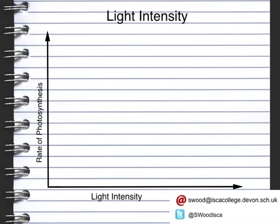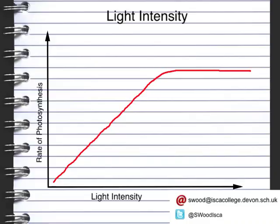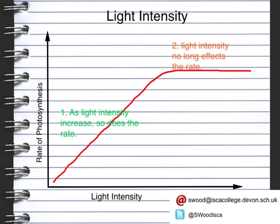Our third and final factor that can affect the rate of photosynthesis is the light intensity. As the light intensity increases, the rate of photosynthesis increases, and similar to carbon dioxide, it then plateaus to become no longer a factor. At stage 1, as the light intensity increases, so does the rate, making it a limiting factor. Then at stage 2, the light intensity no longer affects the rate, so the limiting factors must be the temperature or the concentration of carbon dioxide.